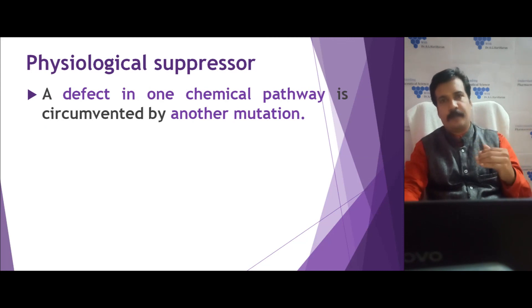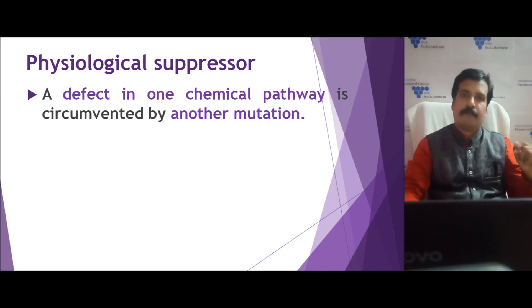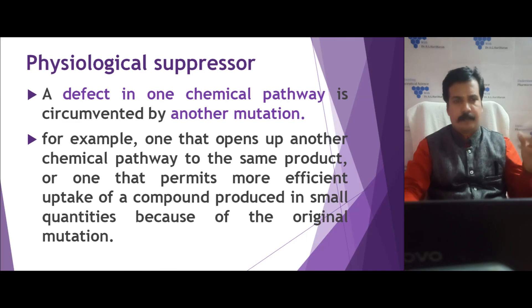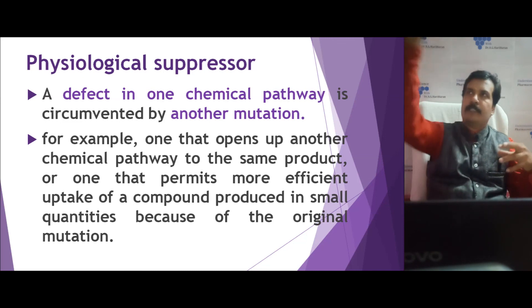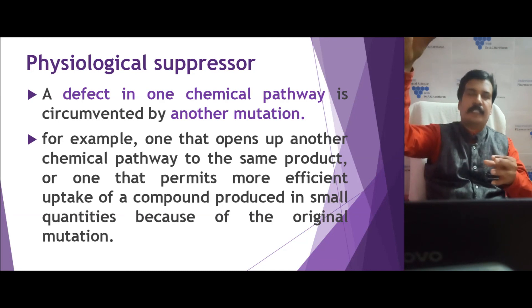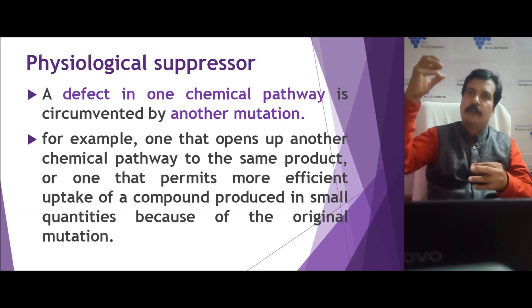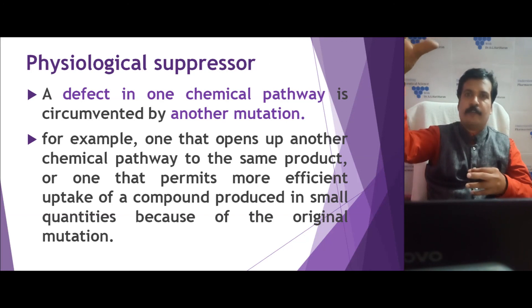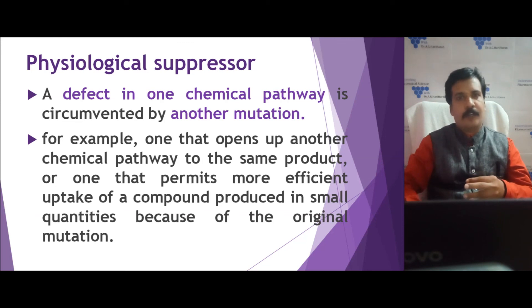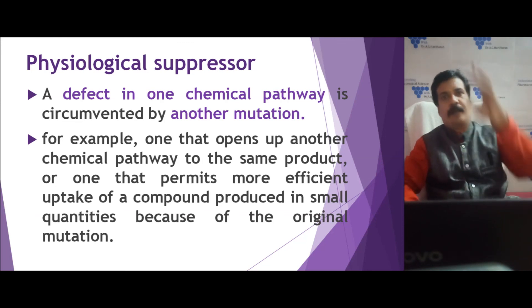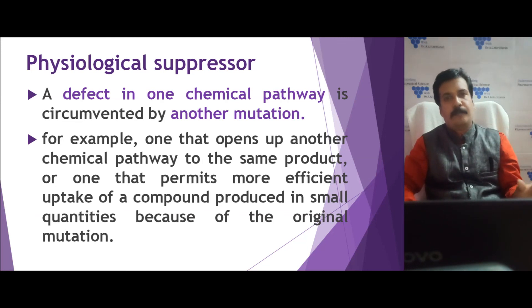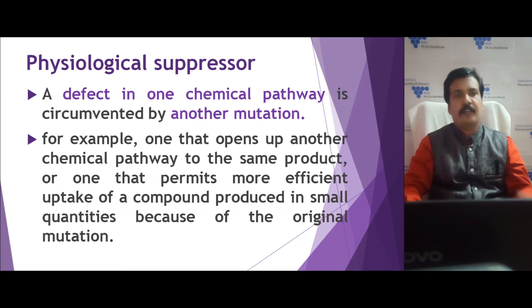The second is the physiological suppressor. Because of the first mutation, a chemical pathway is stopped. The second mutation can cause an alternate pathway for the same chemical. This suppresses the effect of the first mutation. For example, if a substrate needs to form a particular product through certain enzymes — proteins — and a mutation causes a particular protein to not be formed, the biochemical pathway gets stopped. A second mutation then enables the substrate to take an alternate pathway and still produce the same product, suppressing the mutation without affecting physiological activity. That is why it is called a physiological suppressor mutation.